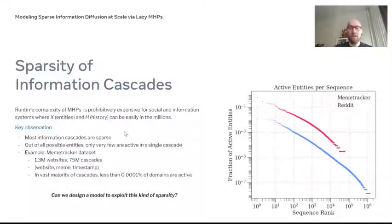One important observation with regard to these large scale diffusion processes is that they're typically very sparse. By sparse I mean that if I take a single cascade, then out of the millions of possible entities that could participate, only very few actually do. What I'm showing here are two examples of public datasets: Meme Tracker and Reddit hyperlinks.